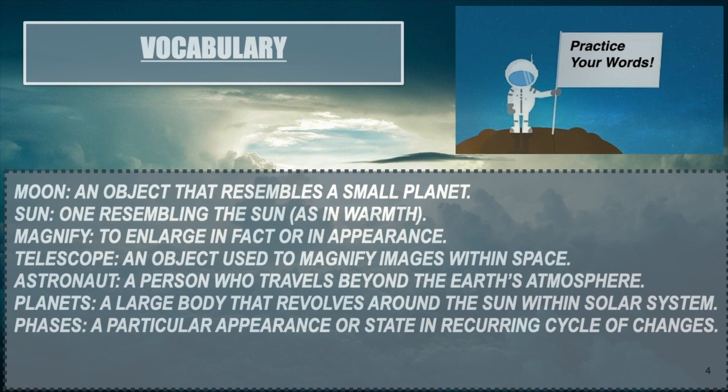The next vocabulary word is sun. The sun is a huge star — it's not a planet because nobody lives on the sun, but just know that the sun is our biggest star. We need it for light and it gives us energy as well. To magnify something means to enlarge it in fact or in appearance — if we magnify something, it means we zoom in on it. A telescope is an object used to magnify objects or images within space. When you look through a telescope, you'll be able to see certain stars, certain planets, and things in the sky that you're not able to see without one.